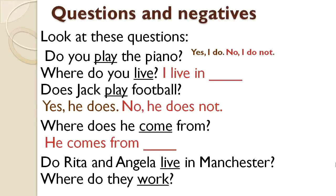We also use the present simple in questions and negatives. Look at these questions: Do you play the piano? — that's a habit. Where do you live? — that's general information. Does Jack play football? — that's a habit, or something that happens repeatedly, every day, every week. Where does he come from? — that's general information. Do Rita and Angela live in Manchester? Remember that Rita is a singular noun and Angela is also a singular noun, but both are connected by 'and,' so they are two — plural. That's why we use 'do.'